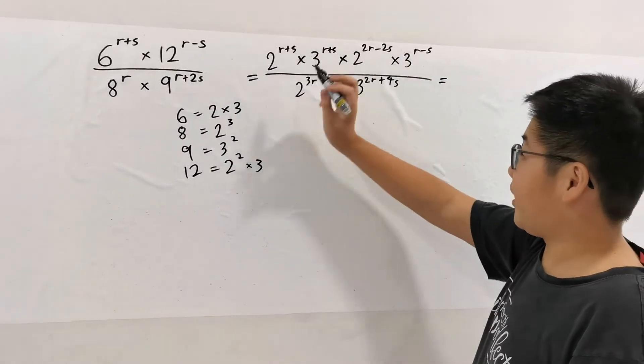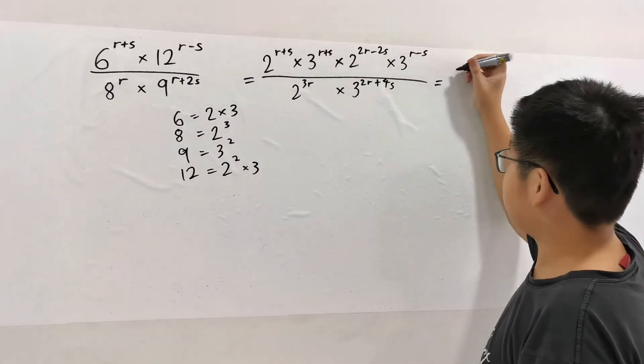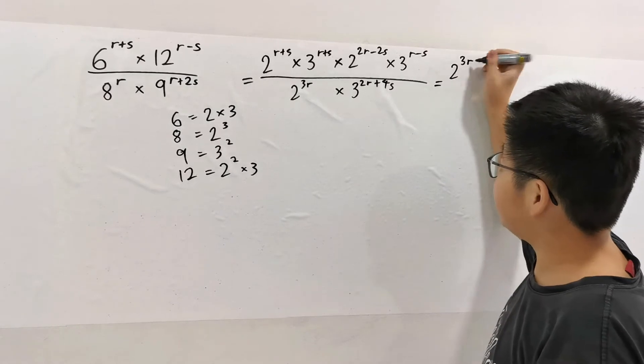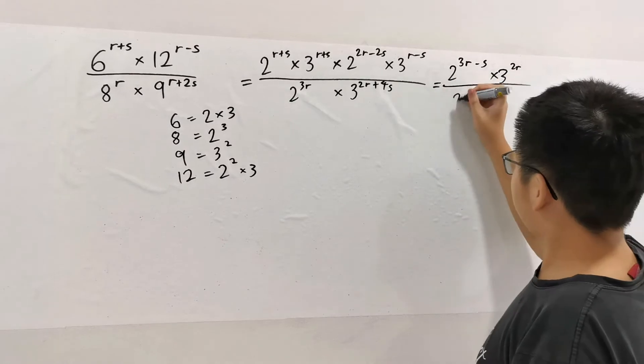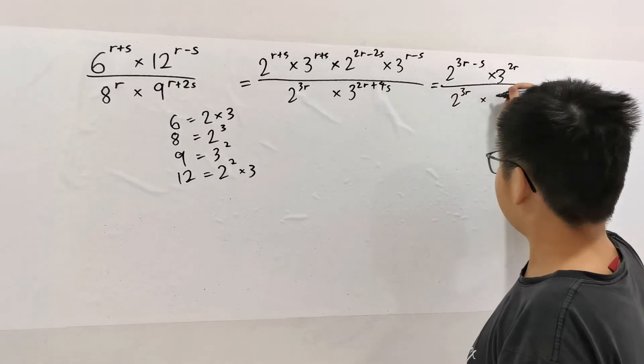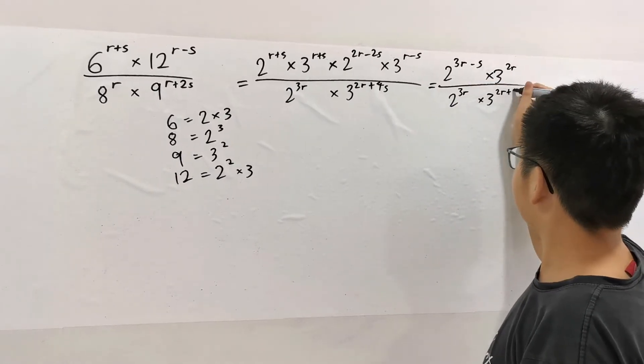And you look at this, all the exponents tell us to add these exponents. 2^(3R-S) times 3^(2R) over 2^(3R) times 3^(2R+4S).